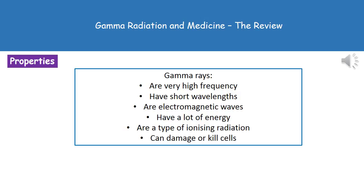We need to be aware of a few of the properties of gamma rays. First, they're very high frequency and have short wavelengths. They are examples of electromagnetic waves. They've got a lot of energy and they're a type of ionizing radiation. The last point to remember is that they can damage, or even kill, cells.